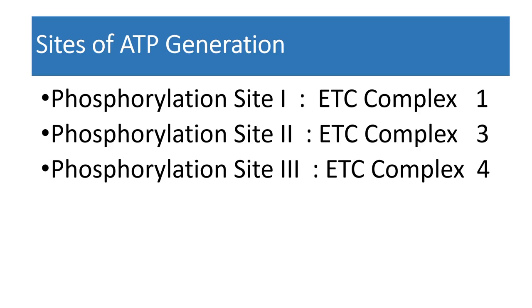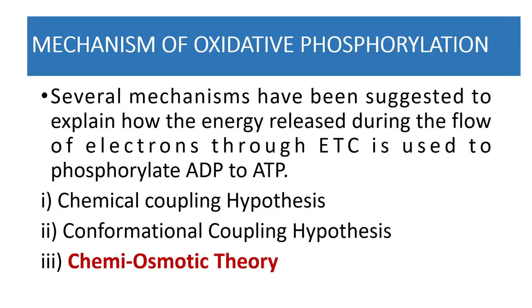The flow of a pair of electrons from NADH to oxygen is coupled with the generation of ATP. For each NADH transferring electrons through Complex I, 2.5 molecules of ATP are synthesized. For FADH2, approximately 1.5 molecules of ATP are generated. This process of phosphorylation coupled with electron flow through the mitochondrial electron transport chain is called oxidative phosphorylation.